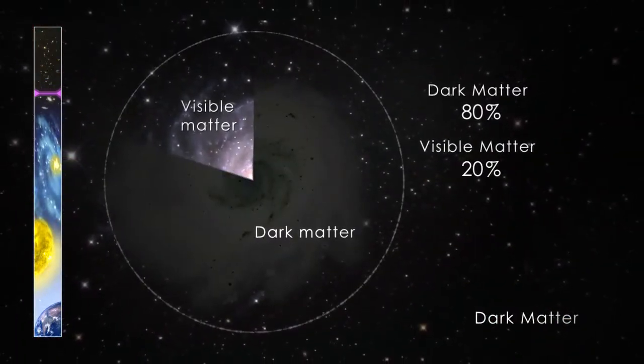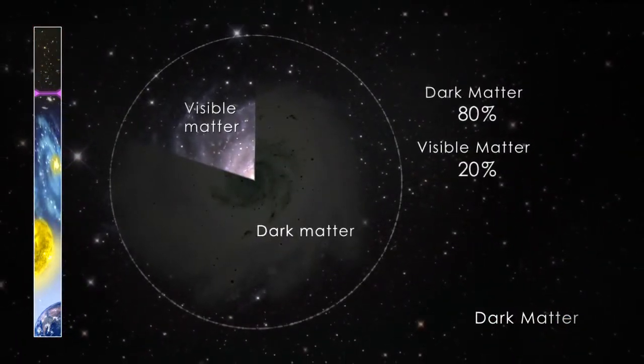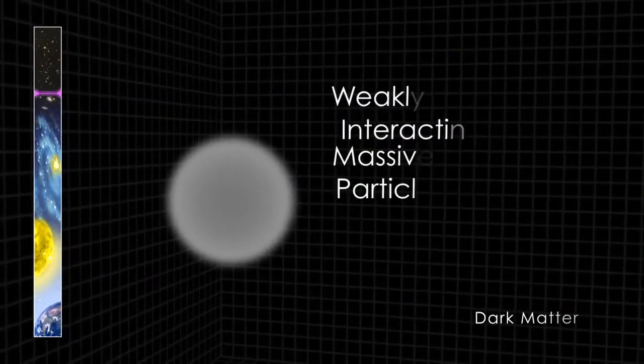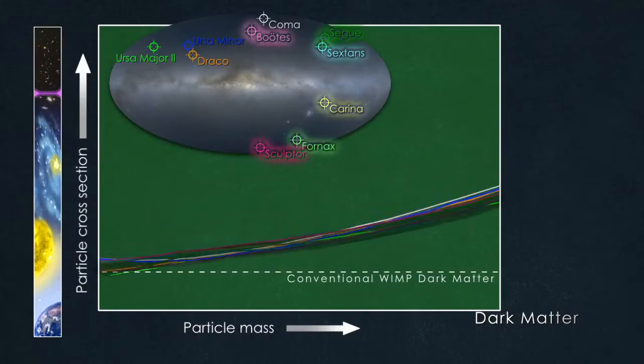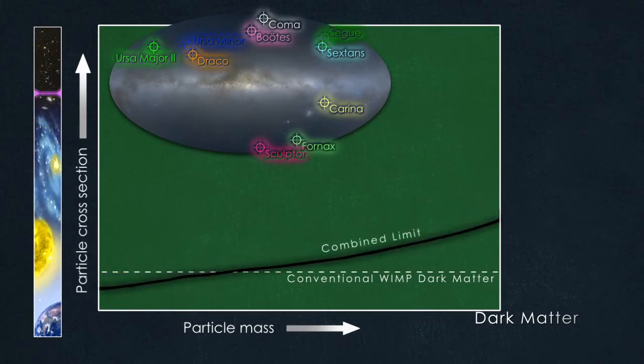Two years of scanning the sky with Fermi's large area telescope have set the strongest limits yet for WIMP dark matter. The longer Fermi operates, the better its ability either to box in the nature of dark matter, or to find actual evidence of what it is.